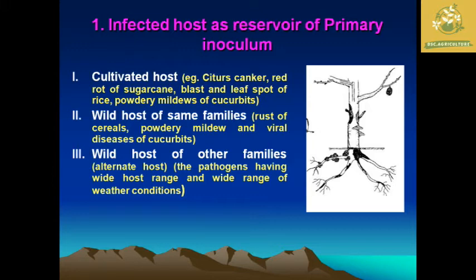These pathogens also live on alternative hosts when there is not a sufficient amount of their permanent host. We can see that these pathogens have a wide host range and a wide range of weather conditions they can tolerate, surviving even in unfavorable situations by forming spores.